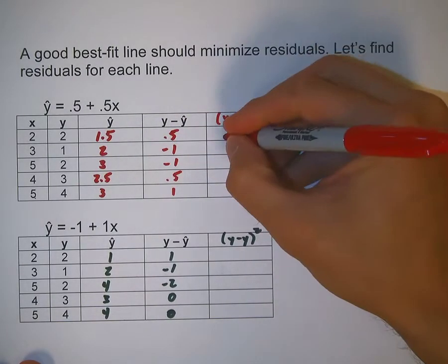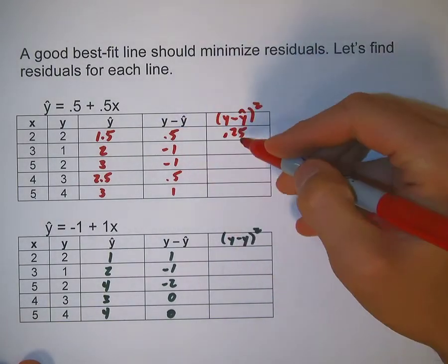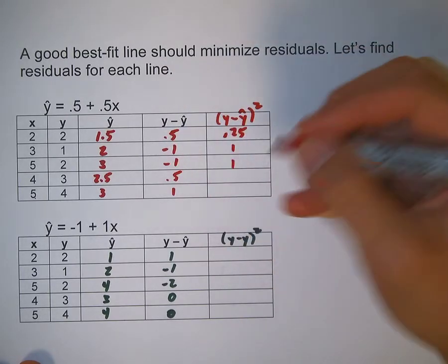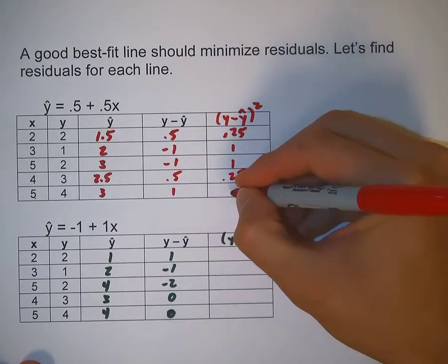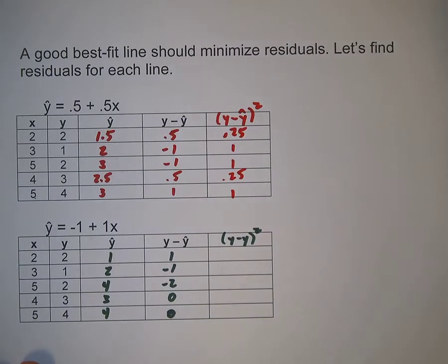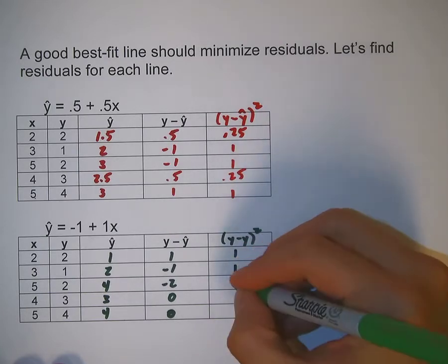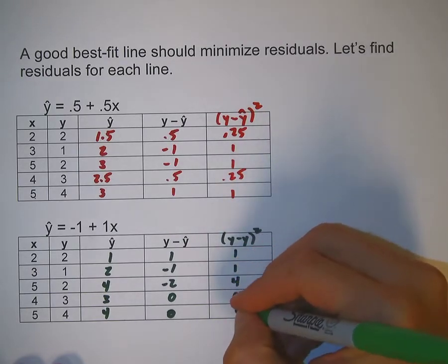So we're just going to square each of these numbers. If we square 0.5, we get 0.25. If we square negative 1, we get 1, 1, 0.25, and 1. And if I square the residuals here: 1, 1, 4, 0, and 0.